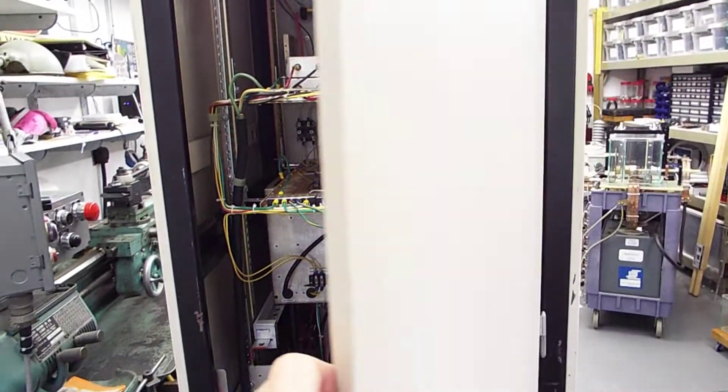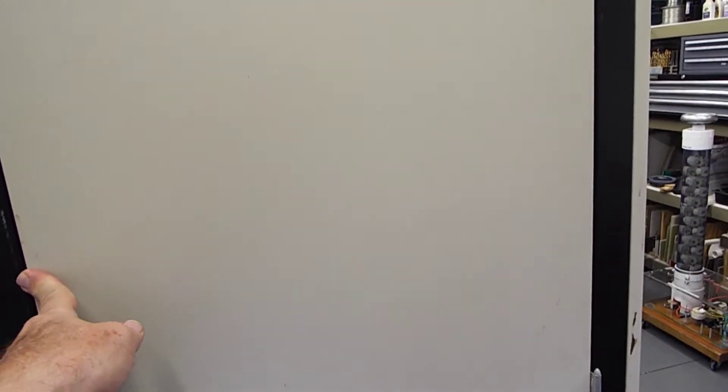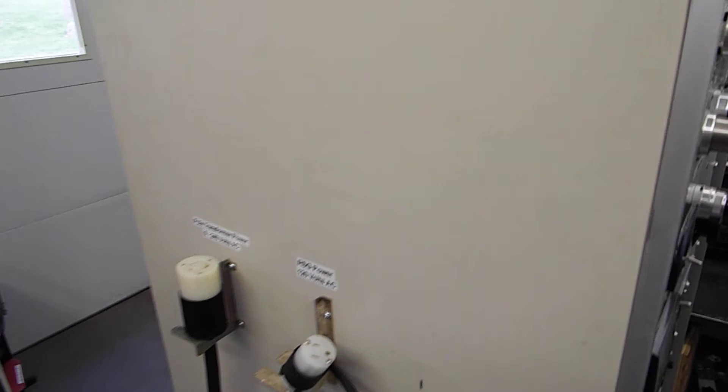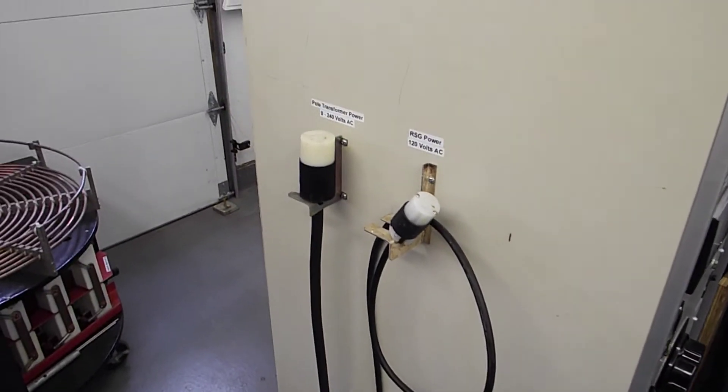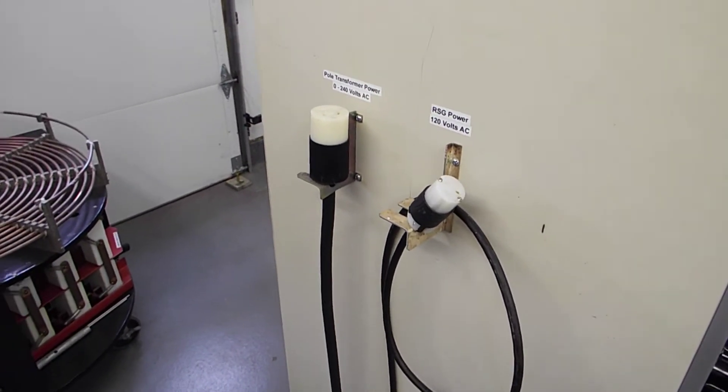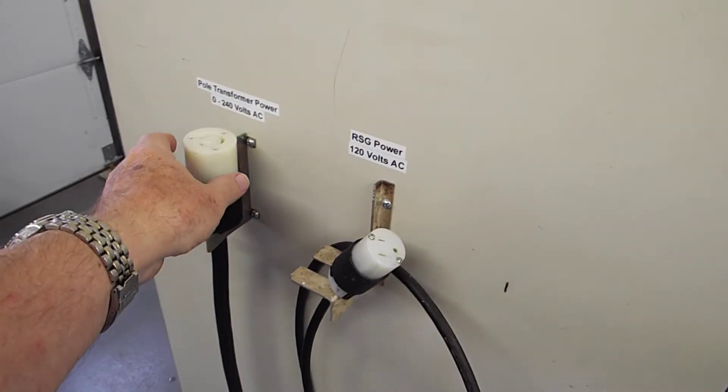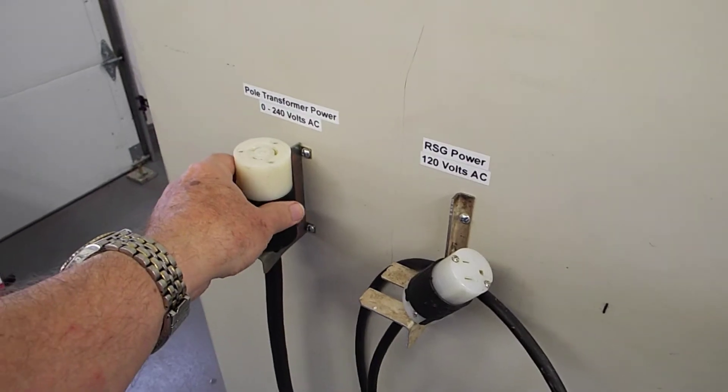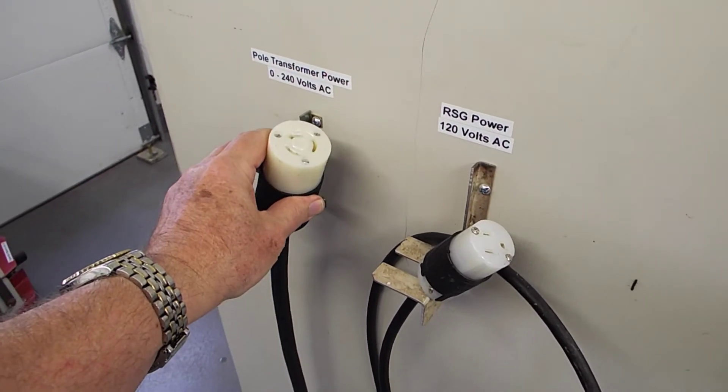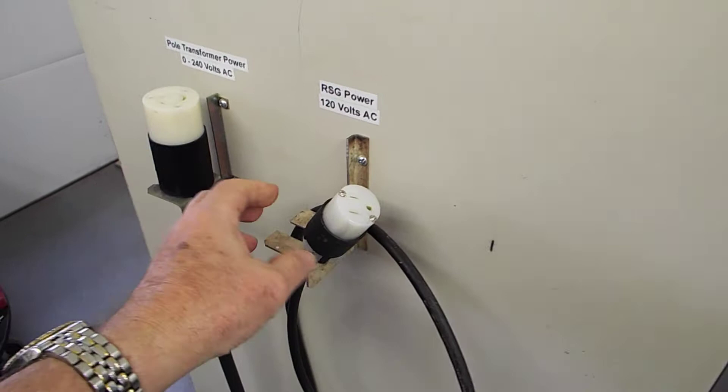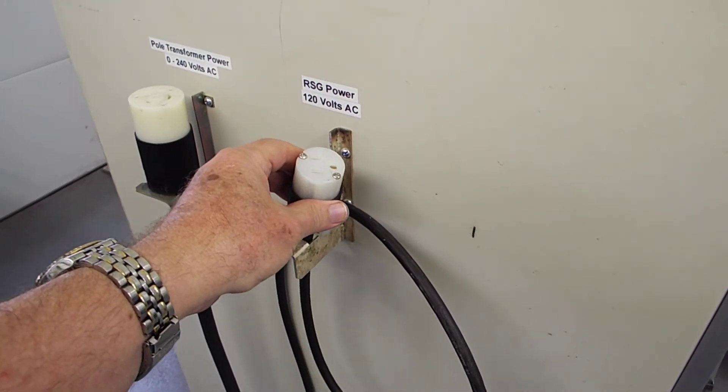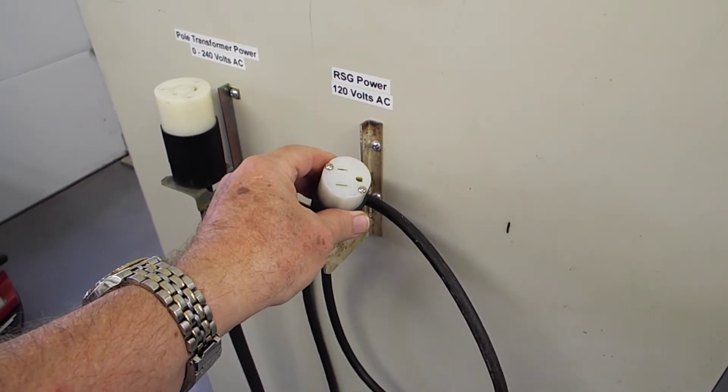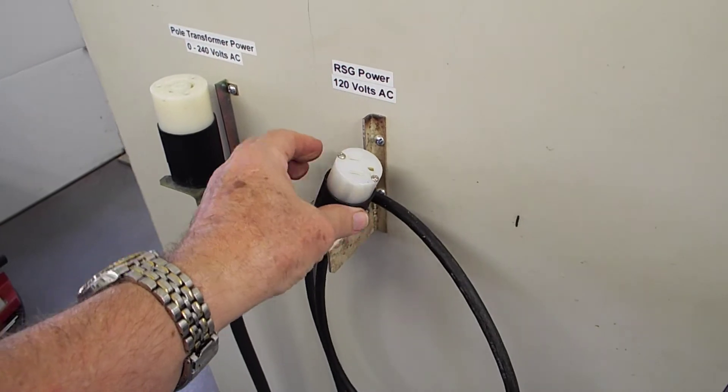Let me close this back up. Move back around to the side here. Of course, there's two wires or cables that come out of this thing. This is the 240 volt, well, zero to 240 that goes to the pole transformer. This is the connector. And this is the 120 volt power supply for the rotary spark gap. So that's what that's for.